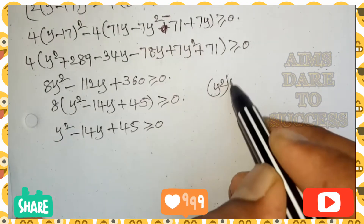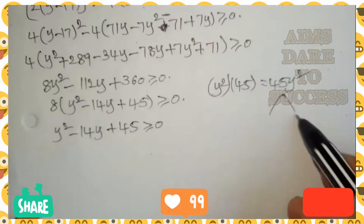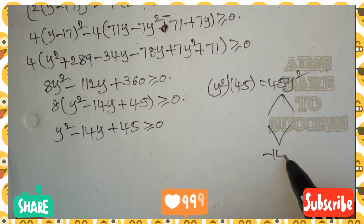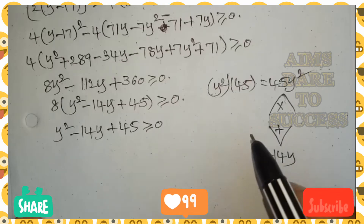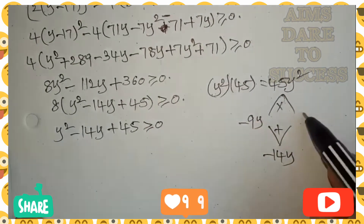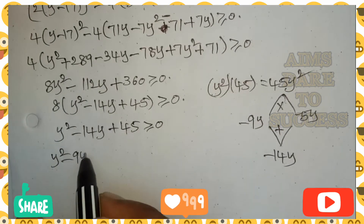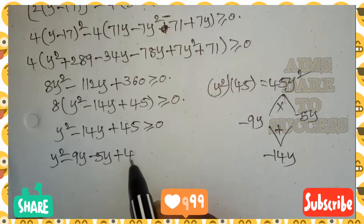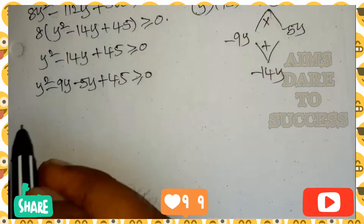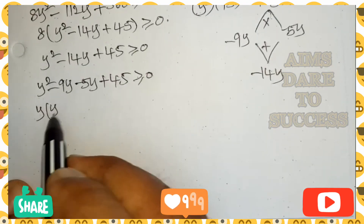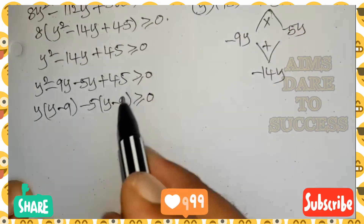This is a quadratic expression. We can factorize: first × last = 45y², middle = −14y. We need two numbers that add to −14y and multiply to 45y²: those are −9y and −5y. So: y² − 9y − 5y + 45 ≥ 0. Taking y common: y(y − 9) − 5(y − 9) ≥ 0.